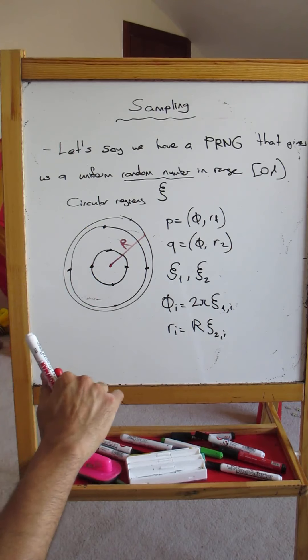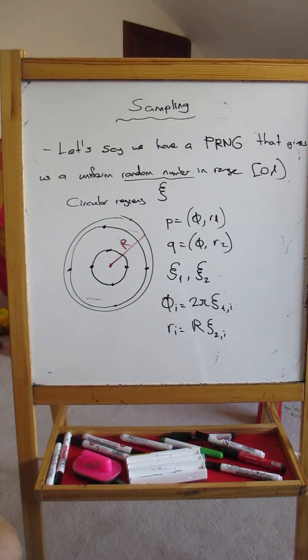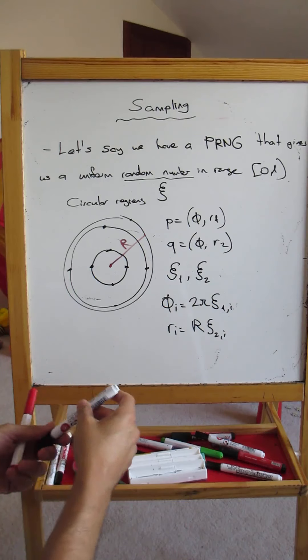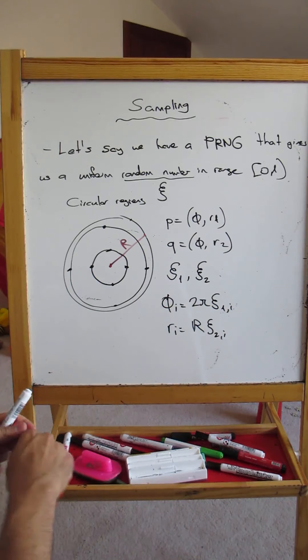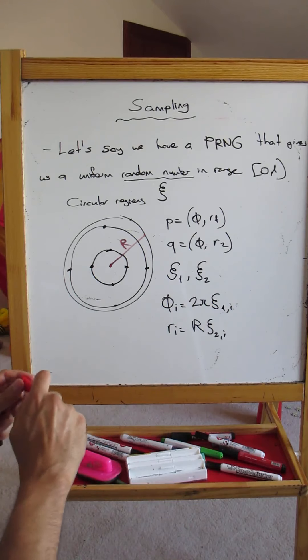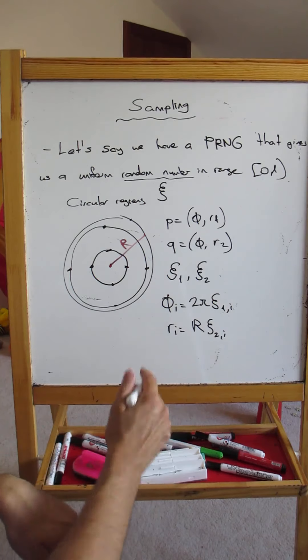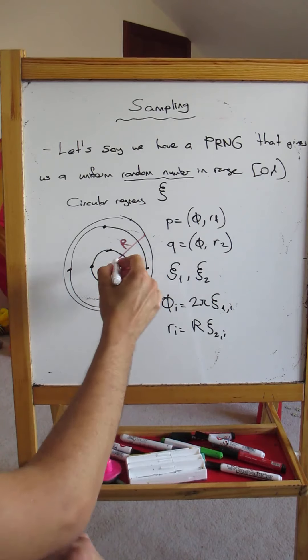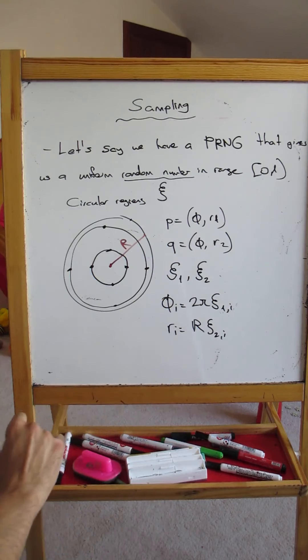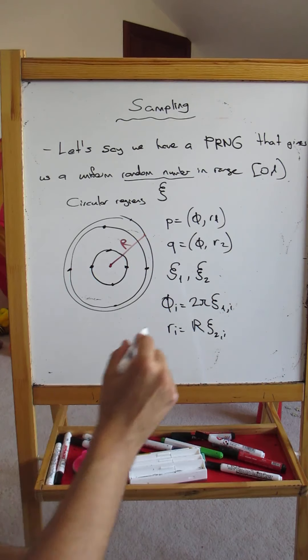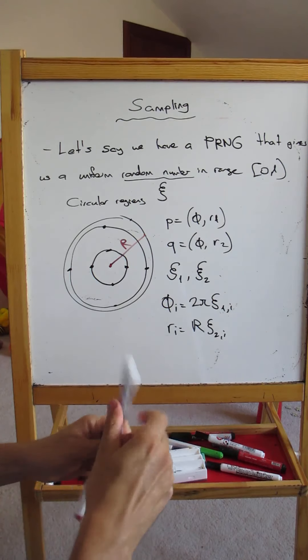This approach does not work for uniform sampling a disk. How do we do that? To give you the answer before we continue: the true method is, instead of r * chi_i, we want to give more samples away from the center, and actually we must put a square root here.